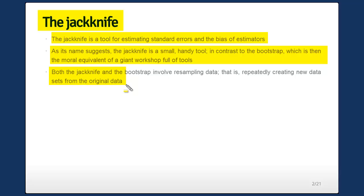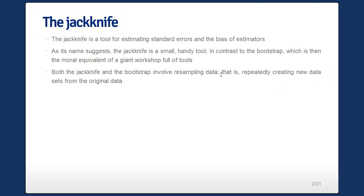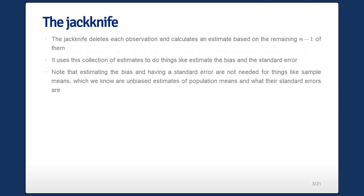The jackknife and the bootstrap involve resampling data — repeatedly creating new data sets from the original data. The jackknife is similar to cross-validation, but your goal is different. You're not validating a prediction error; you're using it to do things like calculate a standard error or bias.